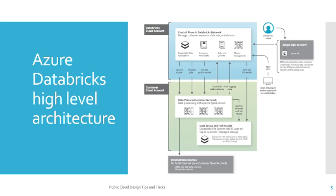Now let's try to understand the high-level architecture of Azure Databricks. Azure Databricks has two sections: one is the control plane and second is the data plane. The control plane is the Databricks web application interface where customers can create notebooks, manage jobs and queues, or handle cluster management. The customer or user can interact with Databricks through the control plane.